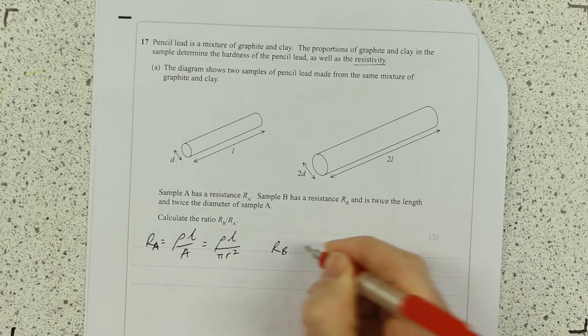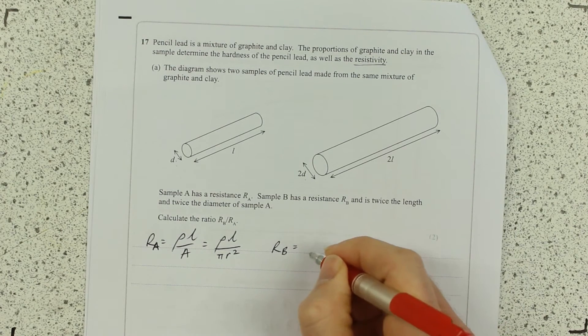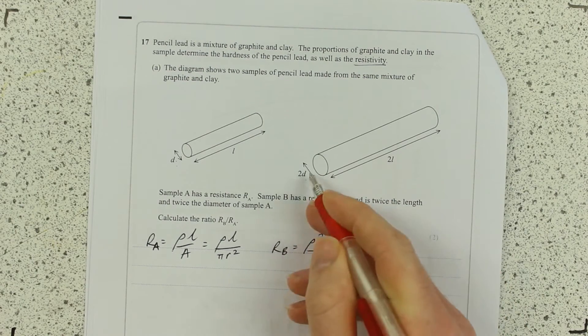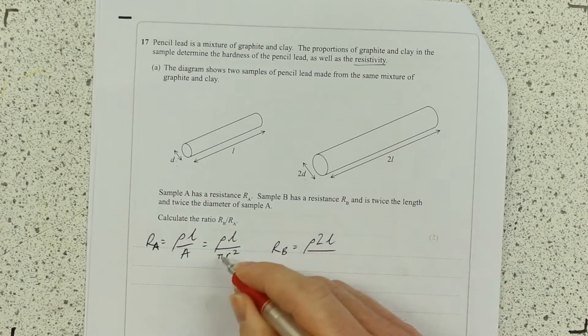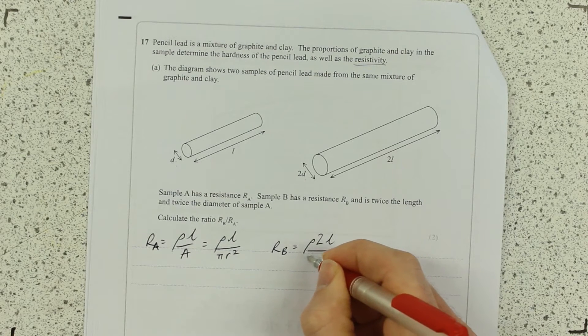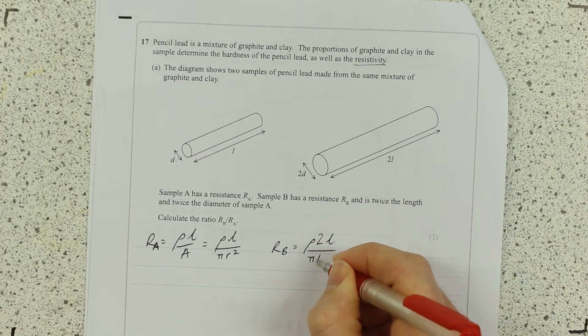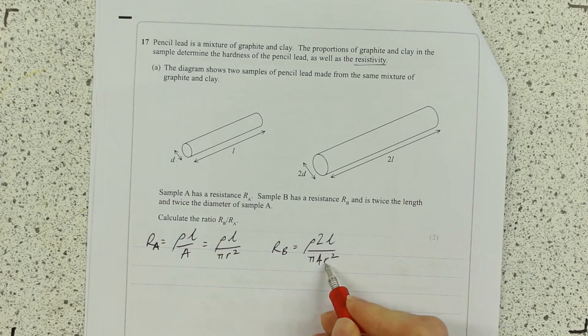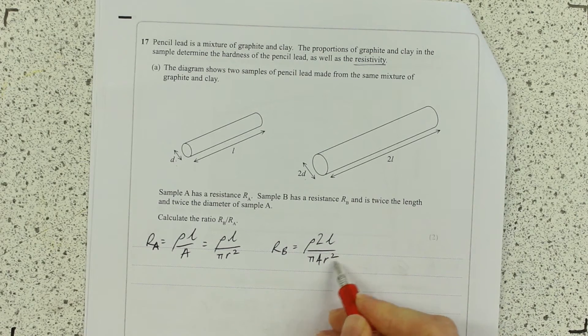Then equation for RB. Well, RB is the same resistivity, twice the length and twice the diameter, therefore twice the R. So it's actually π 4R squared, because that's the same R as that. And that is twice that, so I can do that.